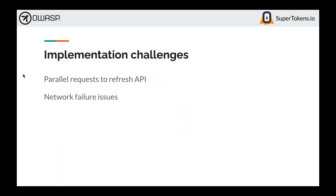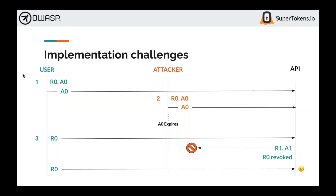Another challenge is network failure. When the user has R0 and uses it, the API revokes R0 and returns R1 and A1. But if those new tokens don't reach the client due to poor network, the client would be forced to use R0 again, which would lead to a false positive.